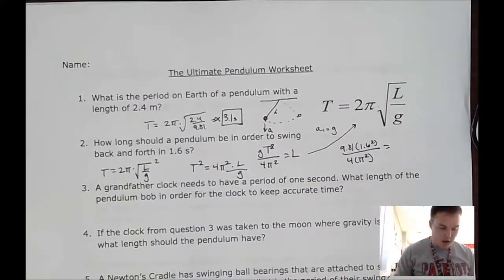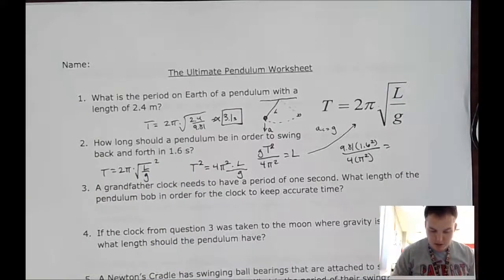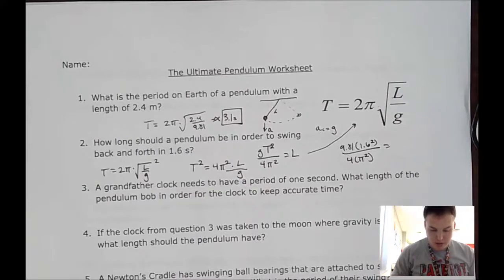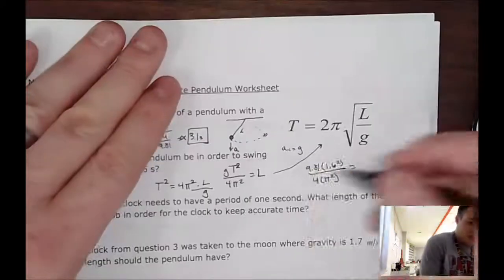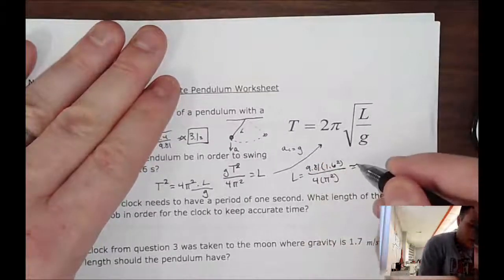So 9.81 times 1.6² divided by 4 times π². And that gives me a length of approximately 0.64 meters.